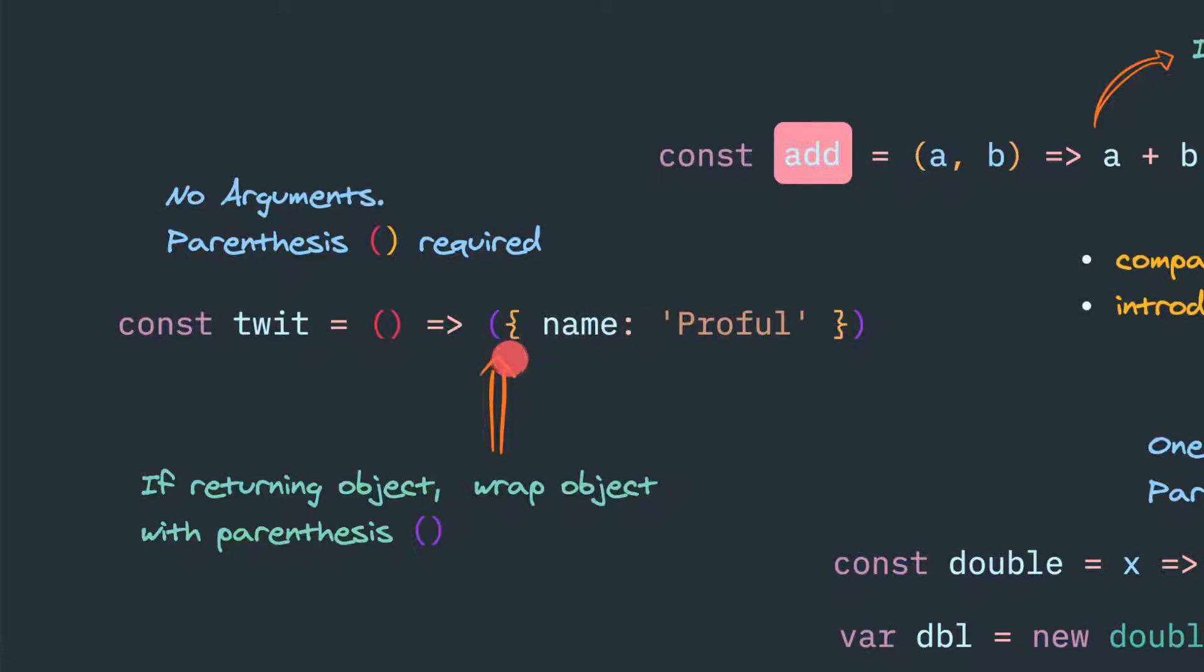If you would like to return an object in a one-liner statement, we must give another parenthesis. Because if you directly try to return this curly bracket, it will return undefined.